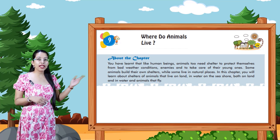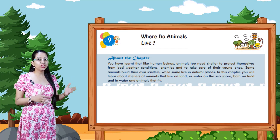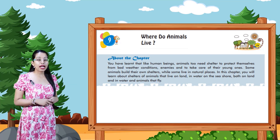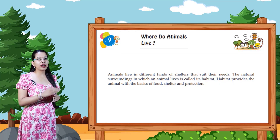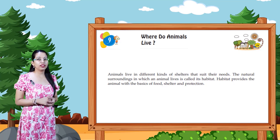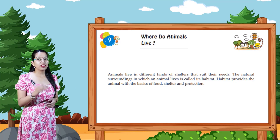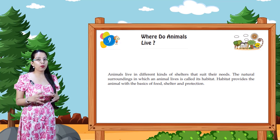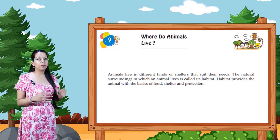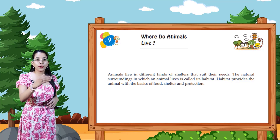In this chapter you will learn about shelters of animals that live on land, in water, on the sea shore, both on land and in water, and animals that fly. Animals live in different kinds of shelters that suit their needs. The natural surrounding in which an animal lives is called its habitat. Habitat provides the animal with the basics of food, shelter, and protection.